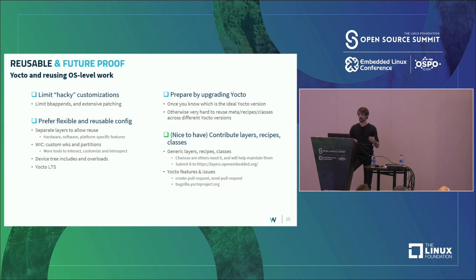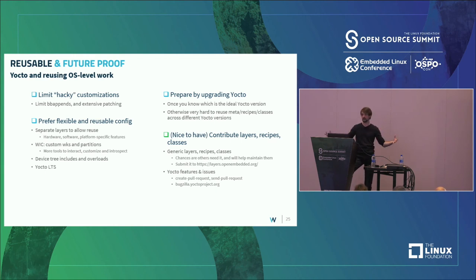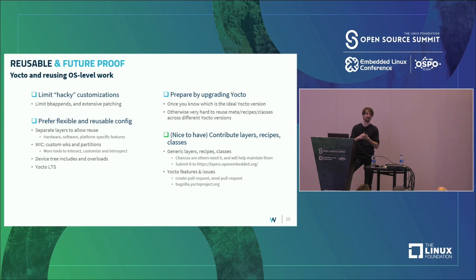The preferred approach is having different layers that scale as your product line grows. Maybe in the future you have a product without a display — separating features from what's expected of a specific device type makes it easier to reuse the right metas. Use configurable formats like WKS for partitioned disks, device tree includes and overlays — anything that makes things slightly more configurable.